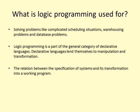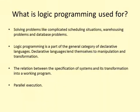Another area of study is the relation between the specification of a system and its transformation into a working program. This is greatly helped by the existence of abstract semantic systems. Another area of interest is the use of logic programming languages for parallel execution. Logic programming languages in their purest form have several features that lend themselves to the design of parallel languages. Prolog itself is a particular manifestation of logic programming that has been adapted for use on a sequential machine, the von Neumann machine.